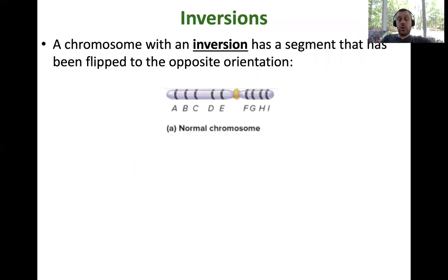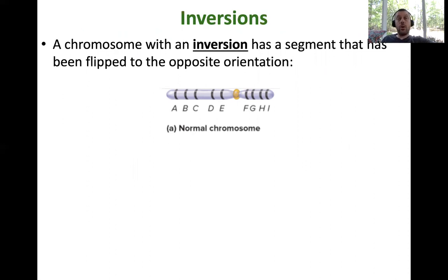At the end of the last lecture, we were talking about duplications. Deletions and duplications change the total amount of genetic information in a cell. The stuff we're going to talk about now — inversions — tend to not change much at all in terms of genetic information. And then we'll go on to talk about where you get whole chromosomes missing or added to the genome.